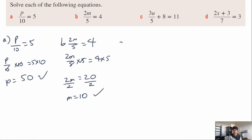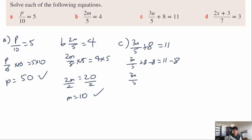Question c: 3u over 5 plus 8 equals 11. The +8 is furthest from u so subtract 8 from both sides first, giving 3u over 5 equals 3. Now multiply both sides by 5, giving 3u equals 15. Divide both sides by 3, giving u equals 5. Give yourself a tick if you got that one correct.